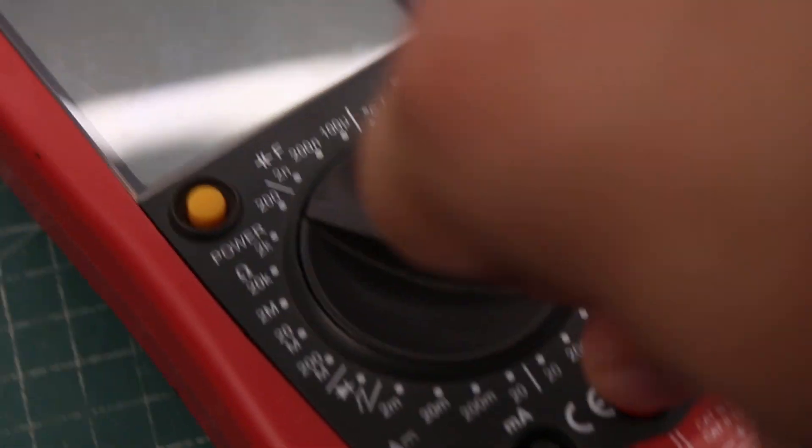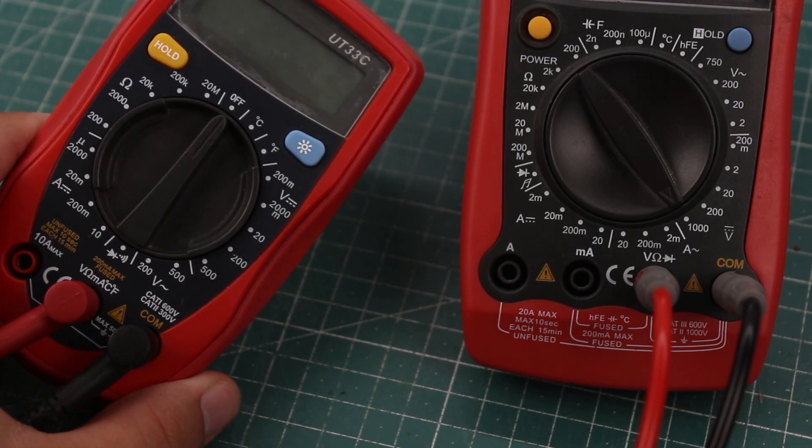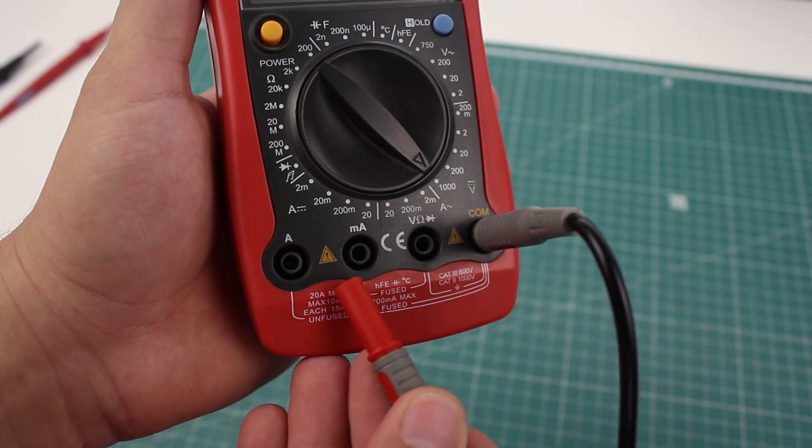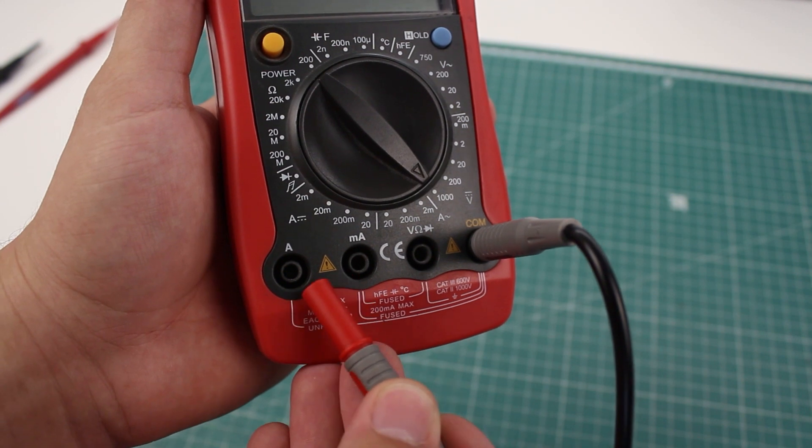To measure everything except the current, connect the red lead to the port that's labeled with a voltage sign. To measure current you have to remove the red lead from the voltage port and connect it to one of the current ports.